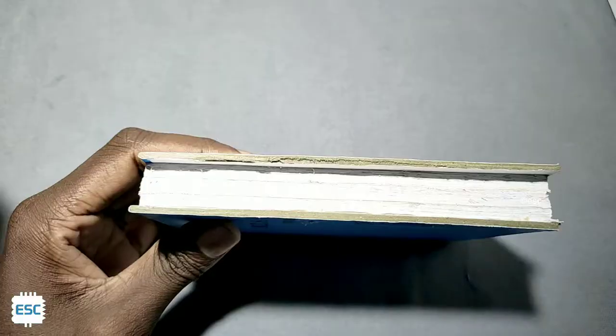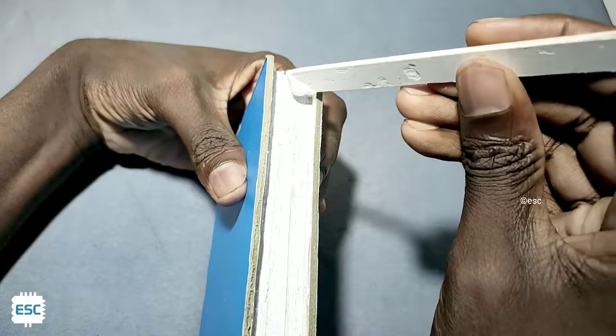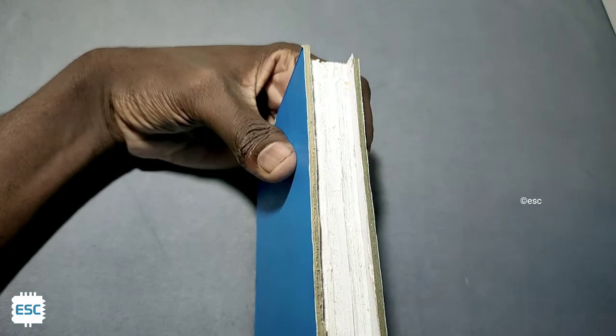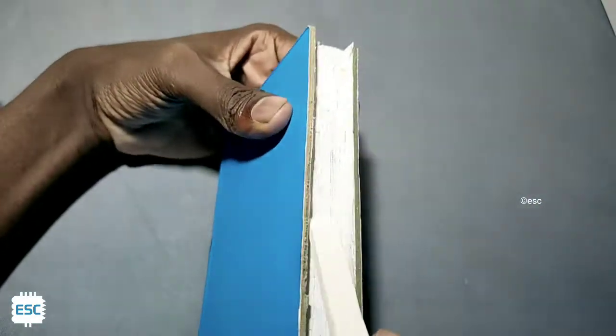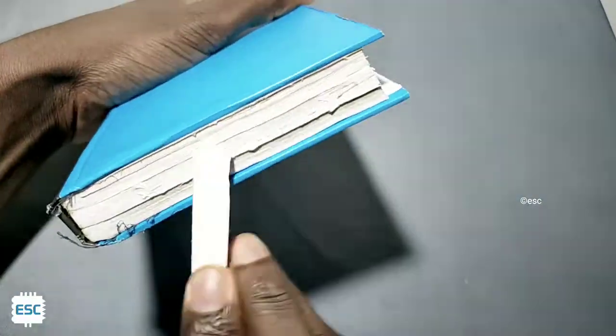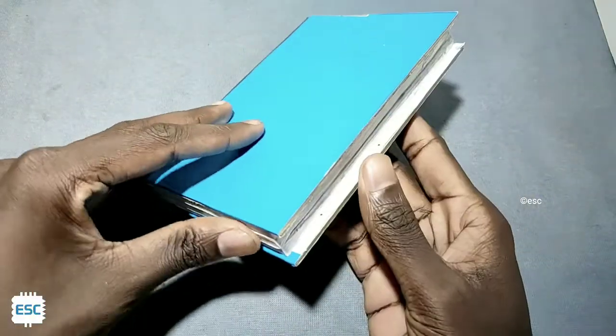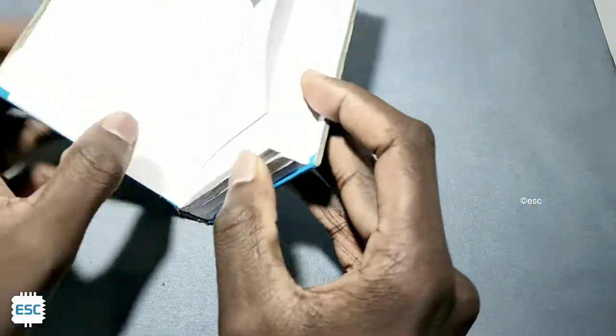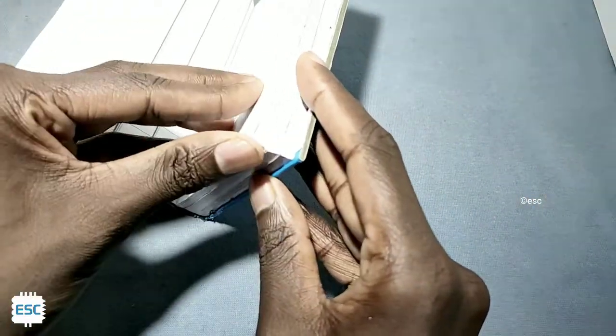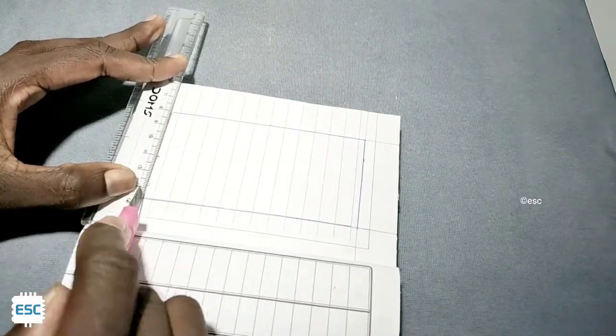So I took this book. Remember the book thickness should be higher than the servo height. After that I glued the book pages and dried, then using a knife and scale I cut the papers inside the book.